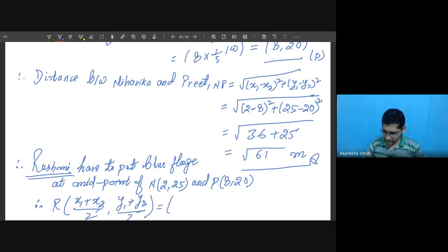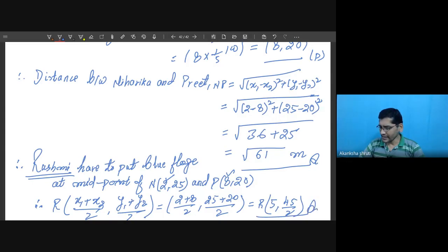Coordinate wise it is x1 plus x2 by 2 comma y1 plus y2 by 2. This is equals to, x1 is 2, x2 for the Preet is 8 by 2, comma y coordinate for the Niharika it is 25 and for the Preet it is 20 by 2. So write in simplified form, you may write this as R, so it becomes 10 by 2 is 5 and it becomes 45 by 2.